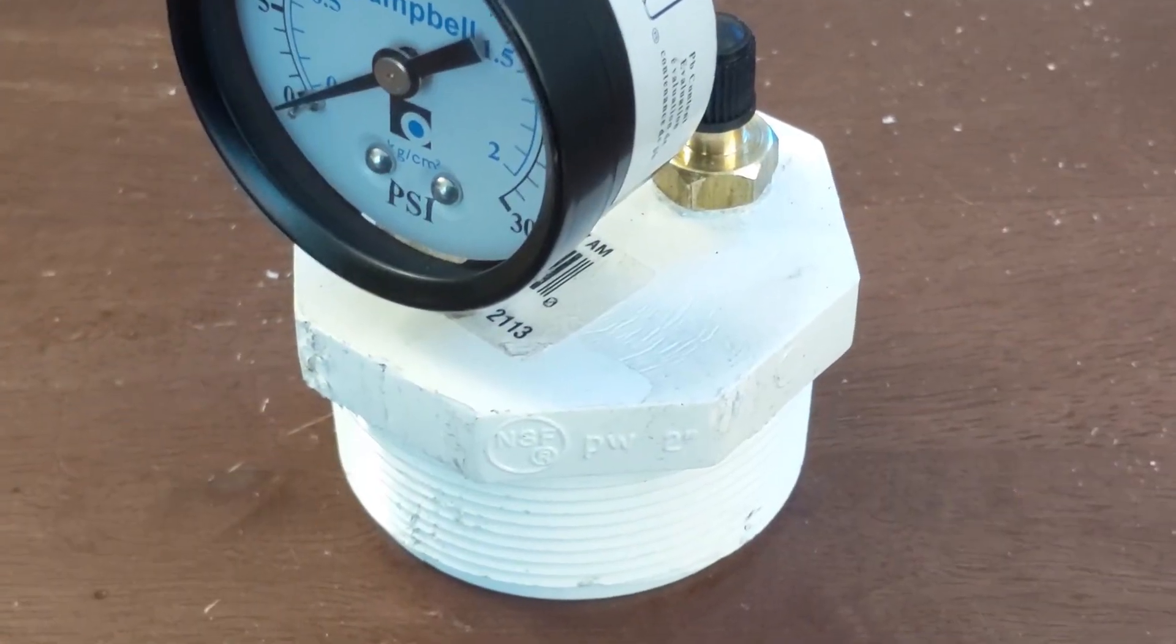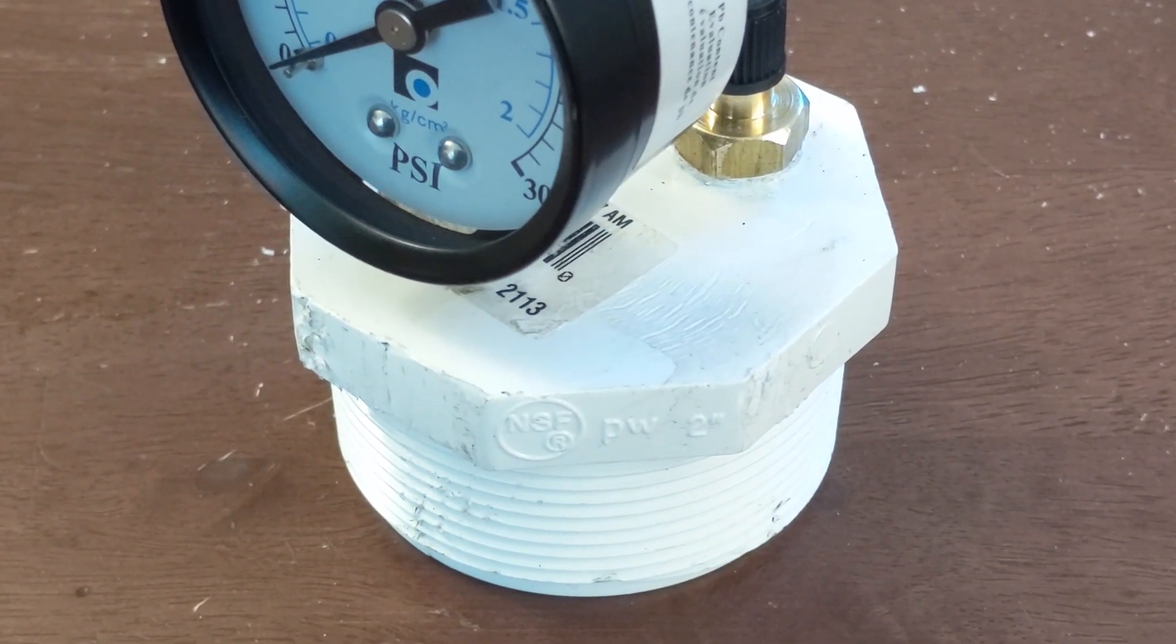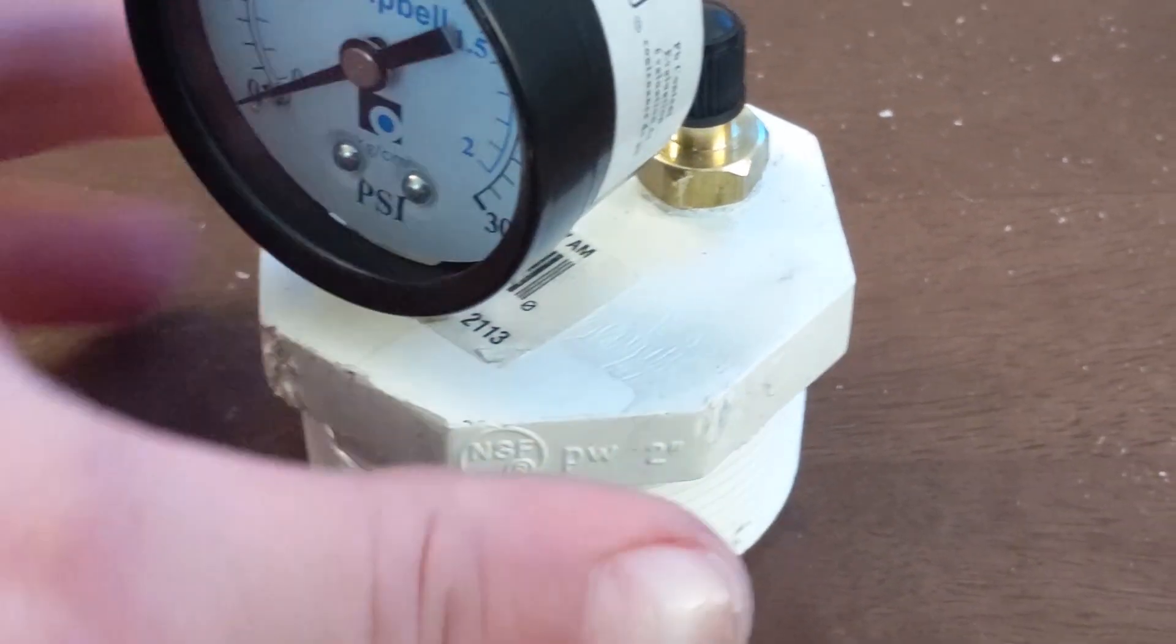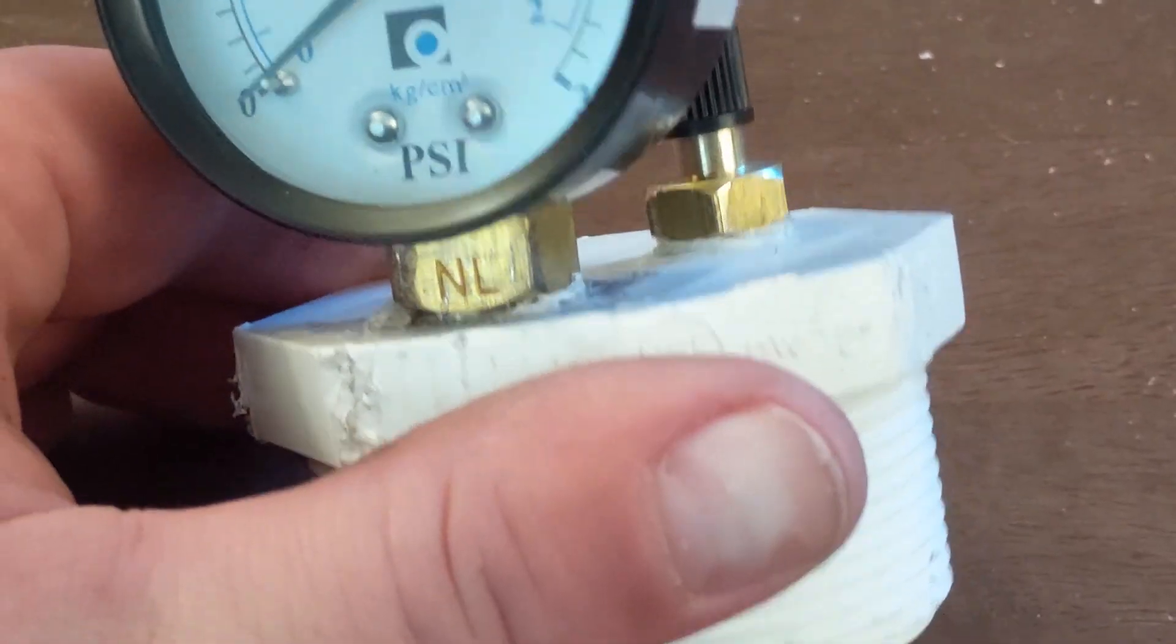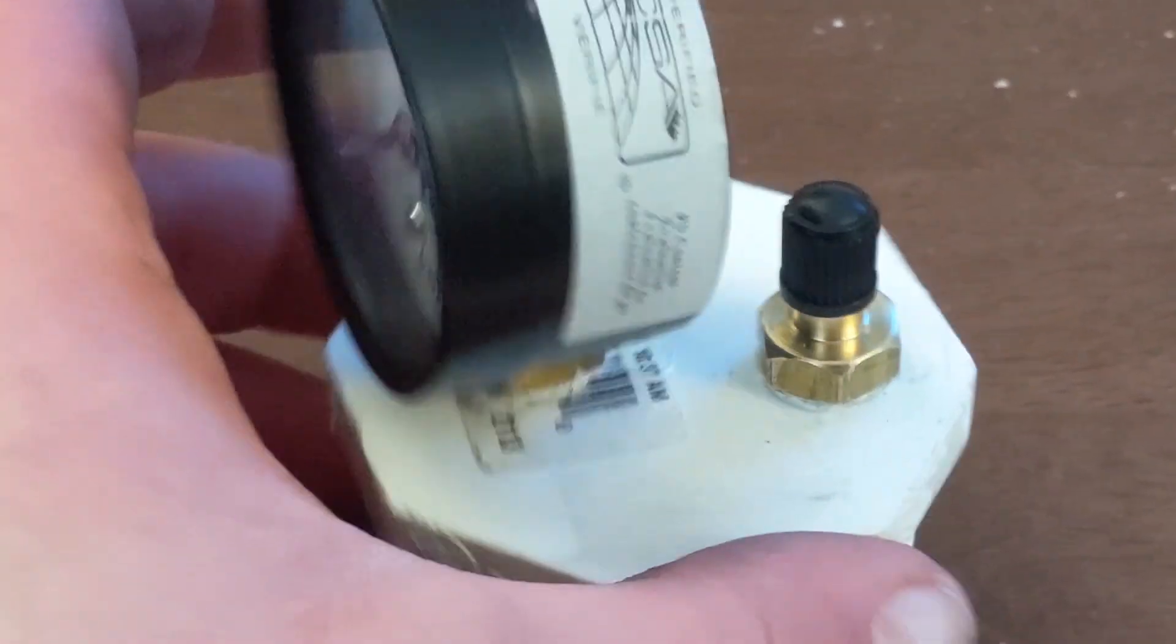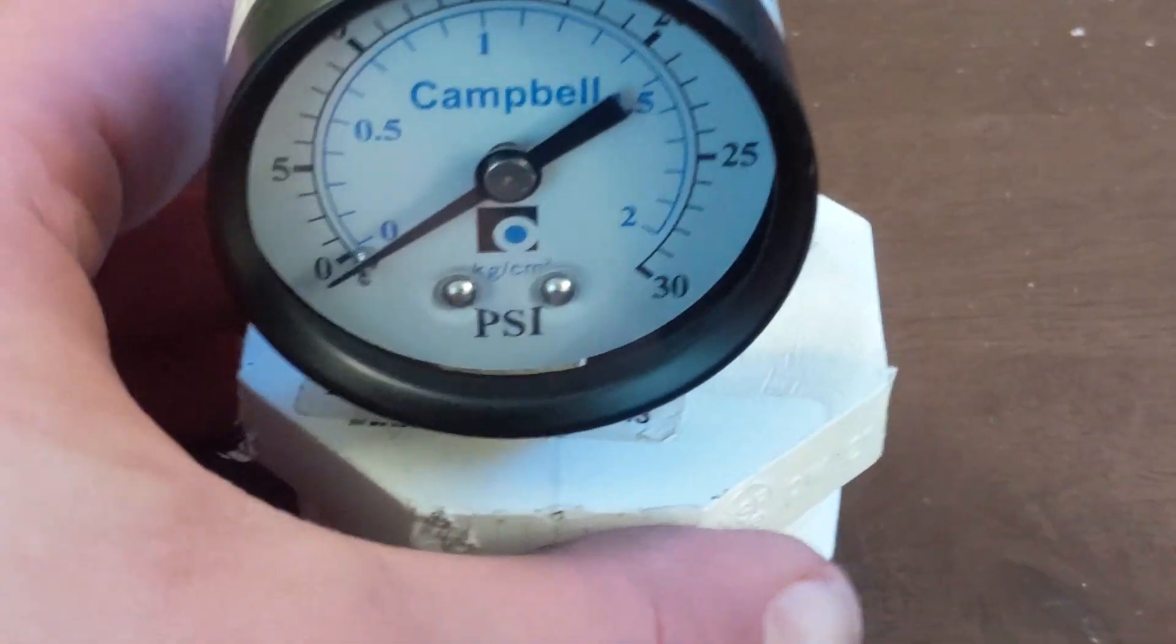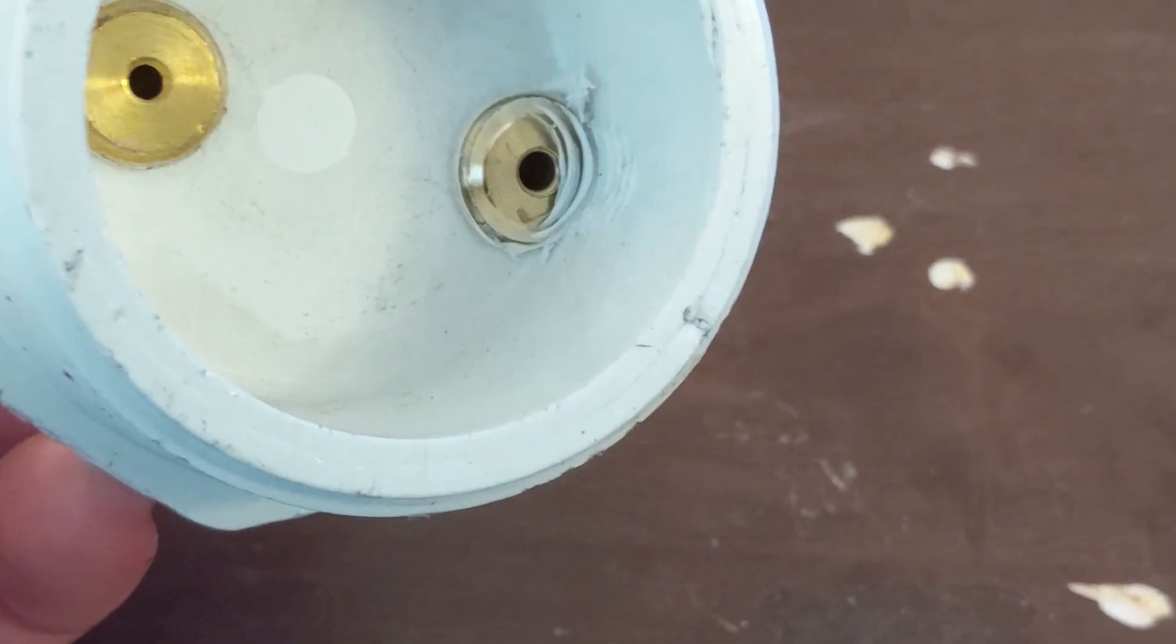That was kind of tough without a bench vise. I did use a medium sized pair of channel locks to hold on to the edge of this. Scarred up the lip a little bit but don't worry, that's not going to affect it. We've got our valve in and we've also got our gauge sitting in here. They went in nice on the bottom, nice and tight.